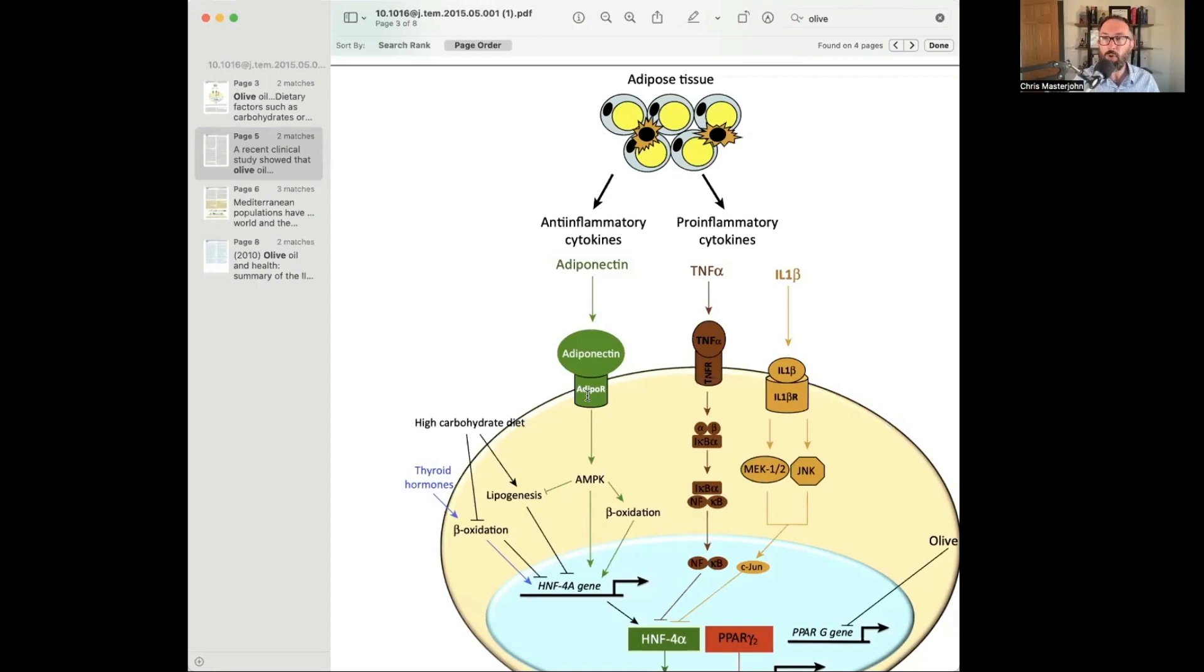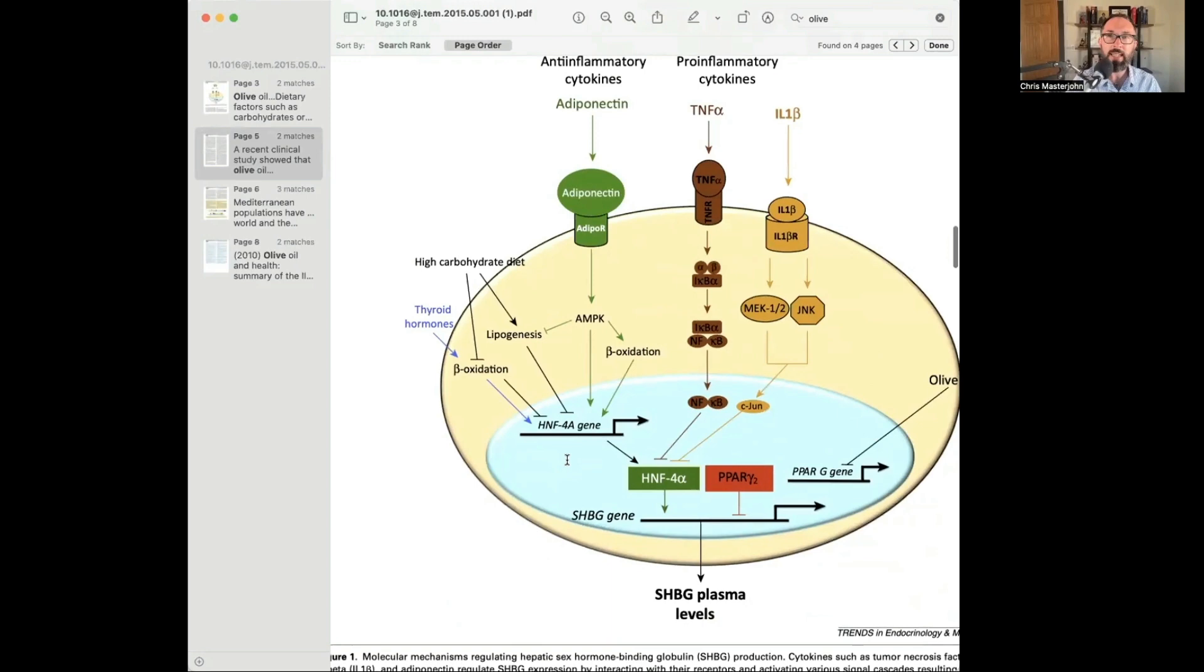Then when you have bone resorption, which you want to cycle into during the fasting state especially, and during the response to stresses of daily life that give stimulus to remodeling your bones, and during exercise, that undercarboxylated osteocalcin will come out in the fasting state during exercise, during bone remodeling, and will make you make more SHBG.